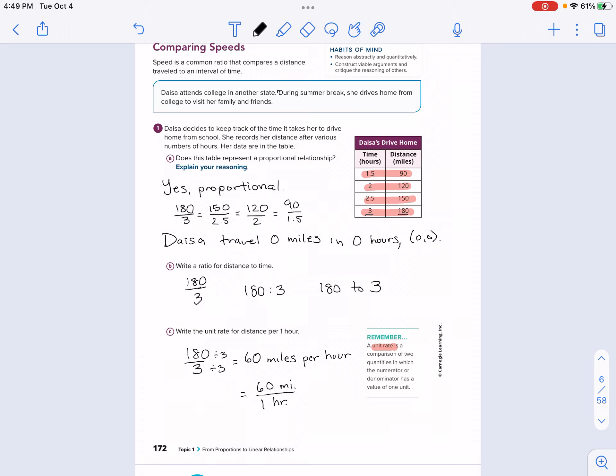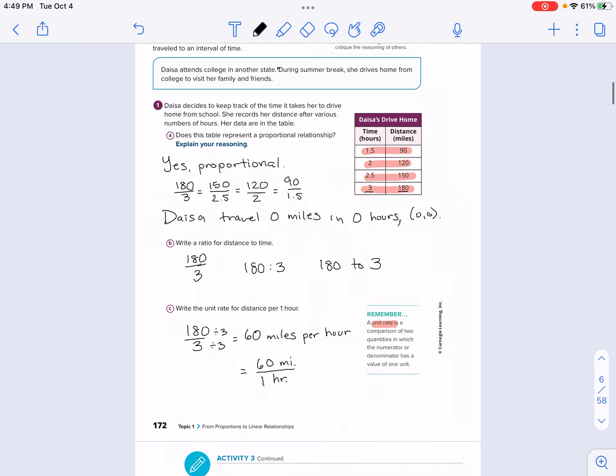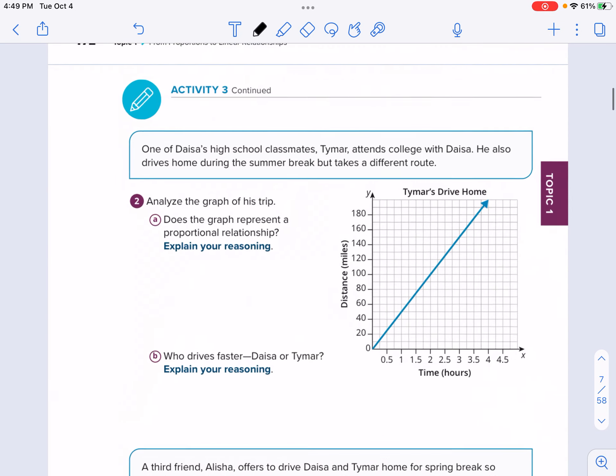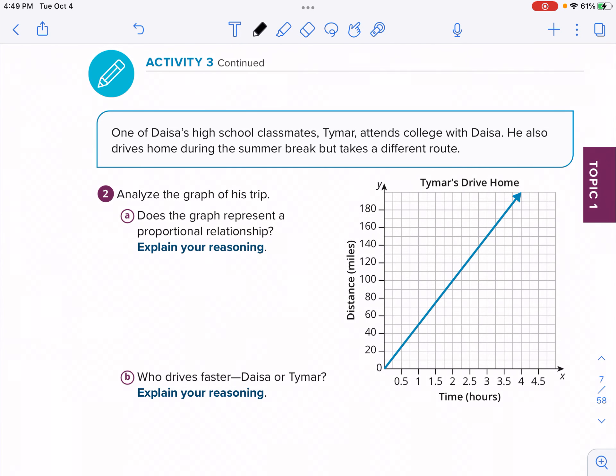So keep in mind, Daisy traveled 60 miles per hour. That's pretty fast. It's probably like going on the freeway. That's not really going on the street along Gibson. That's more of like maybe 30 miles an hour if that. And even slower in a school zone. We're going to compare this with one of her classmates on the next page, page 173. This is one of Daisy's high school classmates, Tamar, attends college with Daisy. He also drives home during the summer break and takes a different route.